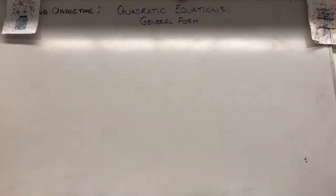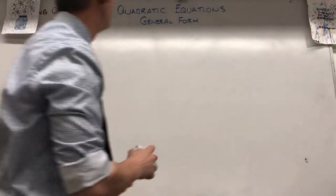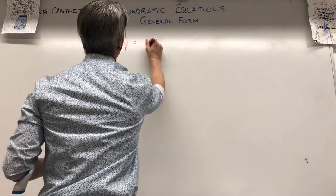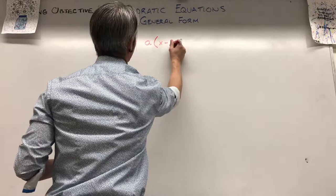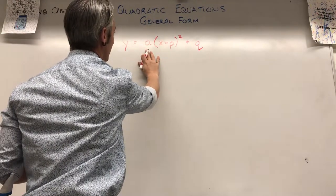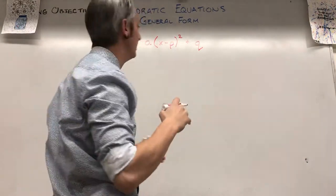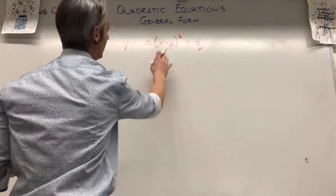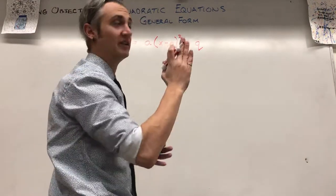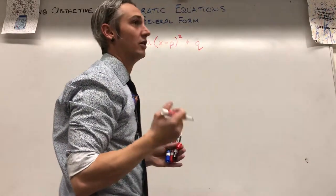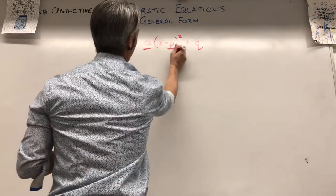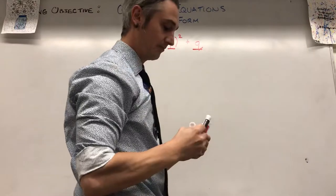Their sibling is the general form. In standard form we have y = a(x - p)² + q. The 'a' was our expansion or compression term — whether we're expanding or compressing, and whether the parabola opens up or down. The 'p' was our horizontal shift and the x-coordinate of our vertex, which is also the axis of symmetry. And 'q' was our y-coordinate of our vertex and our vertical shift up or down.